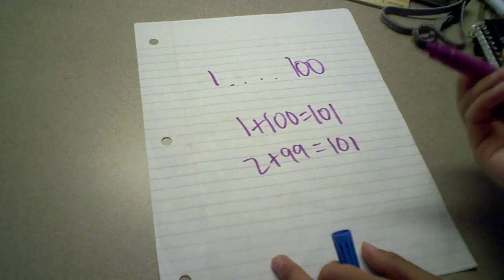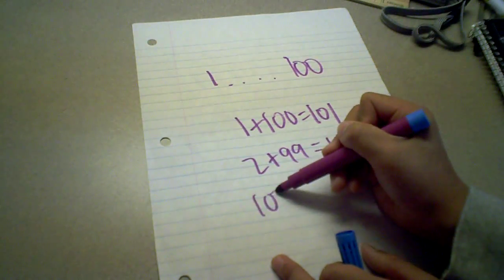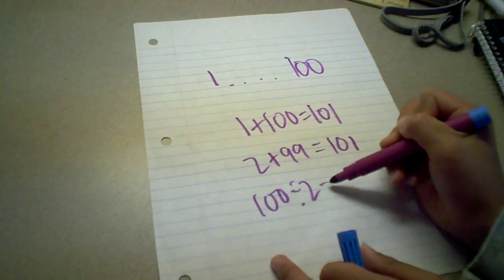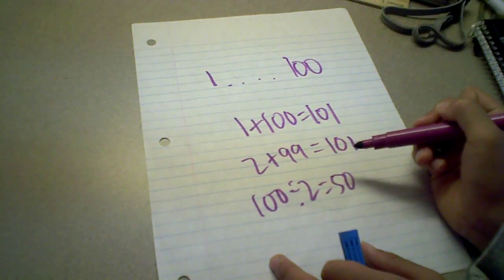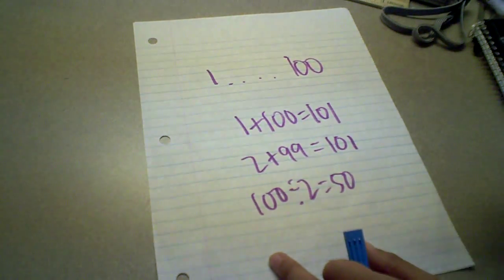How many pairs are in 100? That's 100 divided by 2 equals 50. So there are 50 pairs in 100, and they all equal 101.